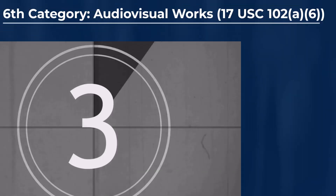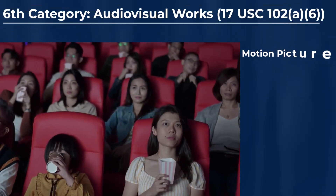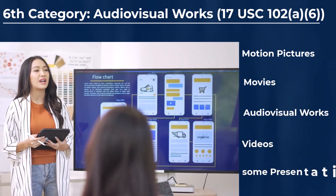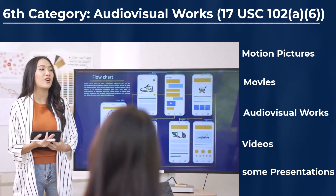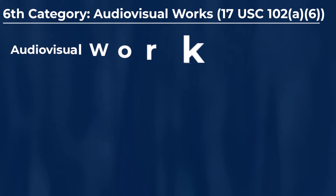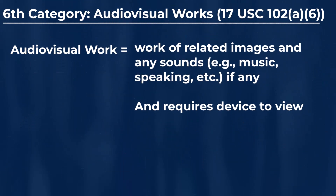The sixth category of creative works that can generally be protected by U.S. copyrights is for motion pictures, movies, audiovisual works, videos, and sometimes presentations like a digital slide presentation or PowerPoint presentation. An audiovisual work is generally defined as a work of a series of related images, together with any accompanying sounds and/or music, that generally requires the use of some equipment — a computer, projector, phone, laptop, tablet device — for one to view and/or hear that particular audiovisual work.